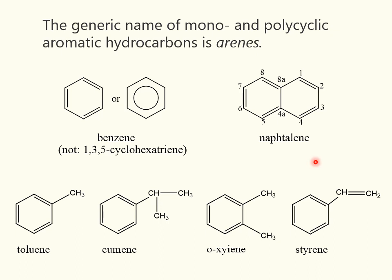Several aromatic hydrocarbons with side chains may be used as parent structures for the names of compounds having non-principal characteristic groups. These are toluene, cumene, xylene, and styrene.